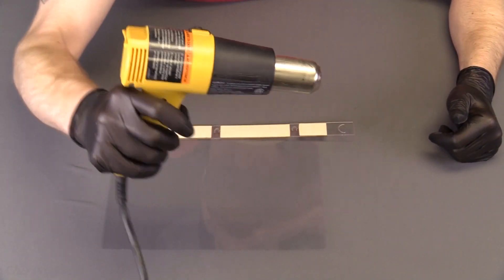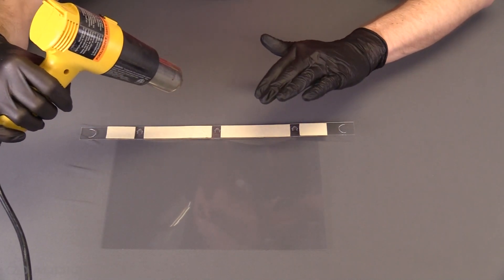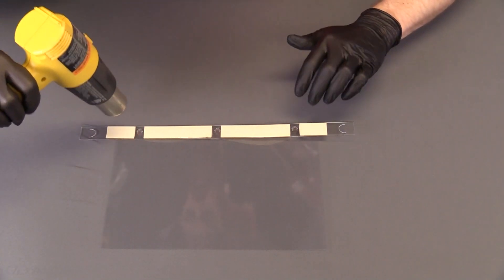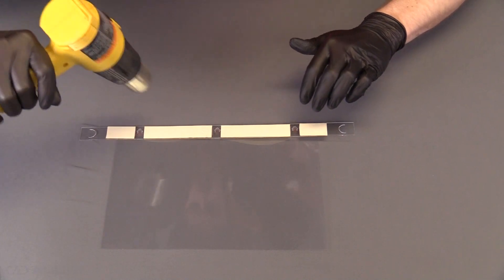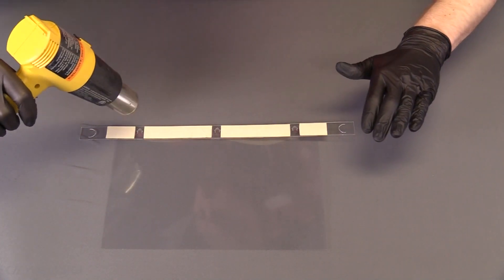I can take a heat gun or a hairdryer, whatever you have, and you just you don't want to hold it on there too long because all this plastic can warp under heat. But we're just trying to make the adhesive on the tape a little tacky.